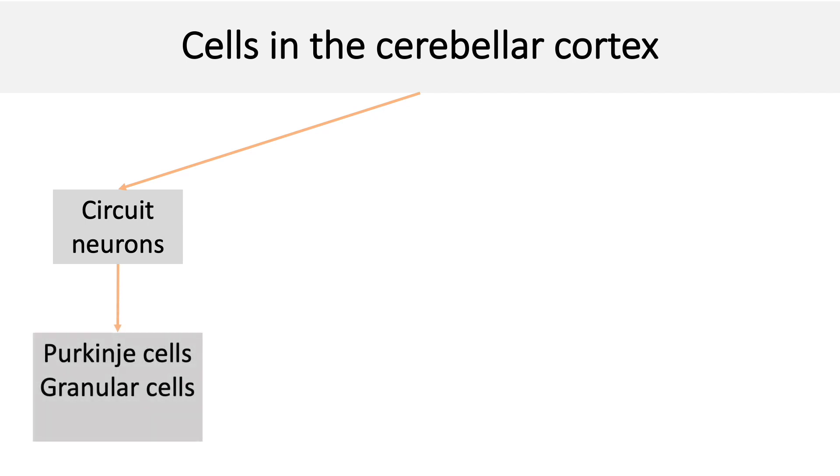There are many types of cells in the cerebellar cortex. They can be grouped as excitatory circuit neurons, which include Purkinje cells and granular cells.